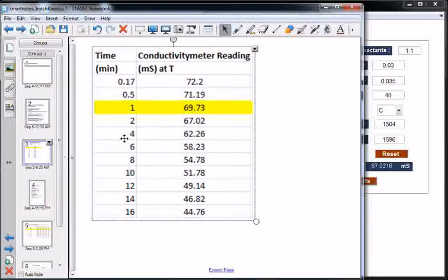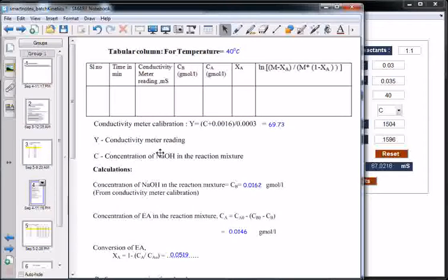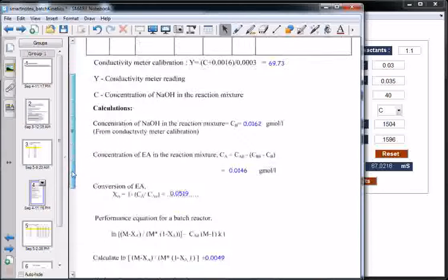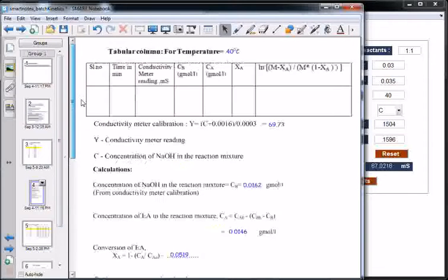This is the observation table. Let us do sample calculation for this reading. At time 1 minute, conductivity meter reading is 69.73. This is calibration, conductivity meter calibration. Y is conductivity meter reading, C is concentration of NaOH. At this conductivity, concentration of NaOH would be this. From this calibration curve, concentration of NaOH in the reaction mixture is this one.